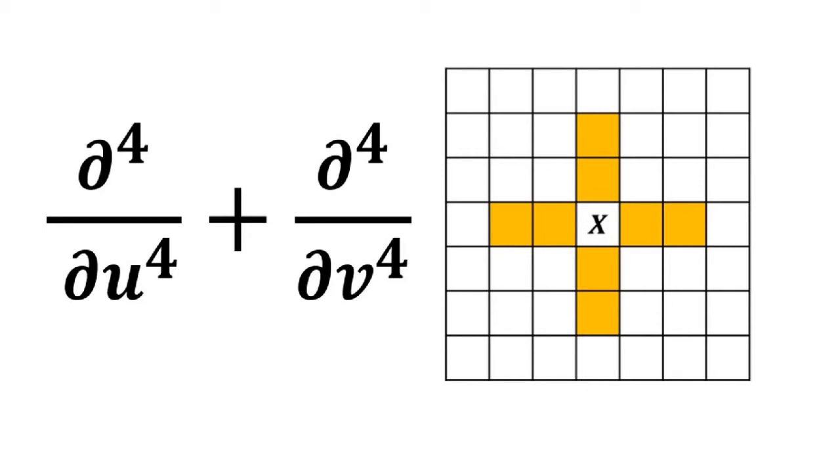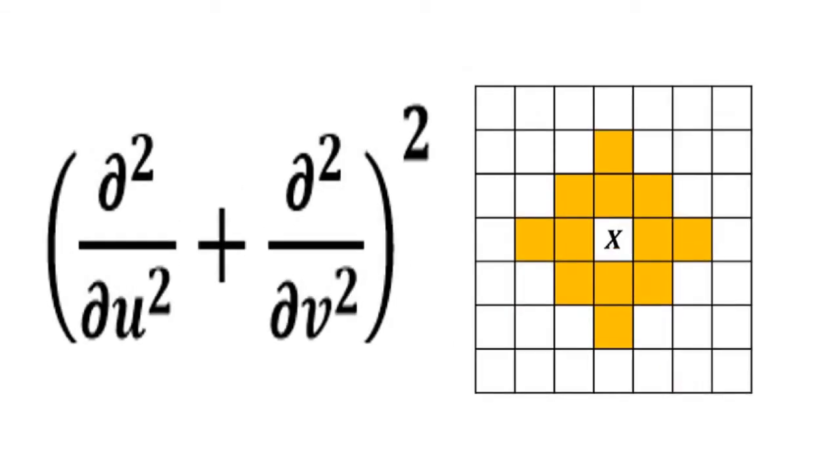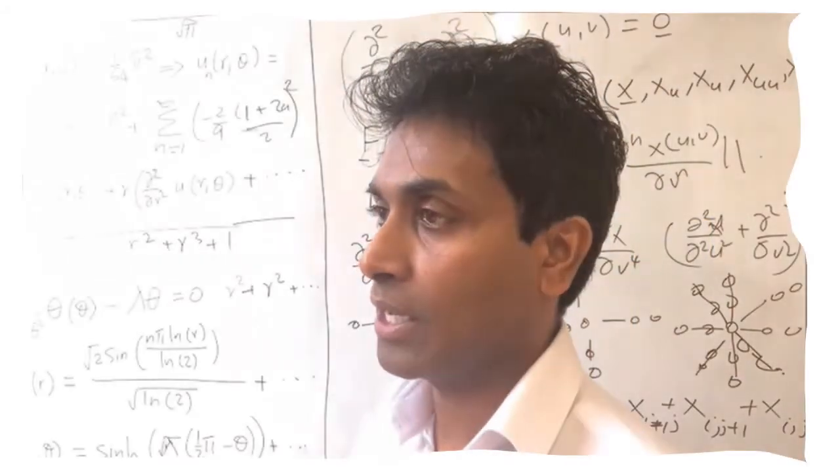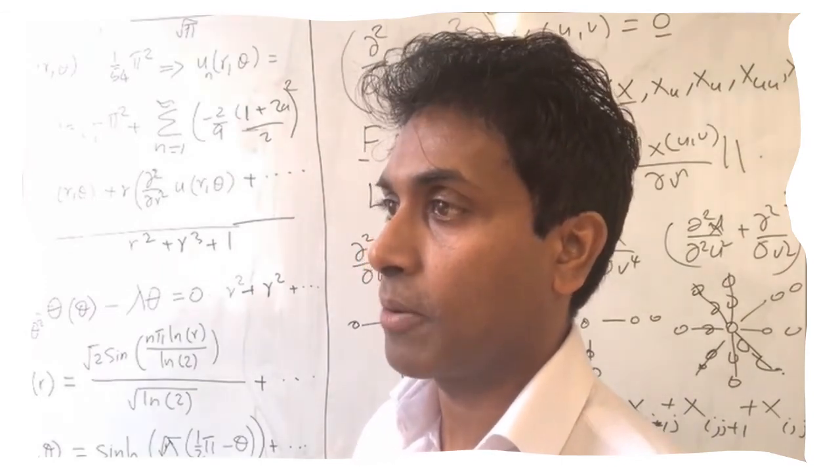Now interestingly, if you take the biharmonic operator, you can see that the spread of the averaging process is higher and within the domain of a point. So you are not only getting the north, south, east, west points but you're also getting the cross derivatives. So this is why we are proposing to use the biharmonic operator, because it gives you a bigger region around a point to sample from.